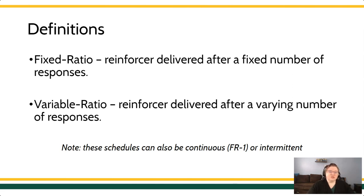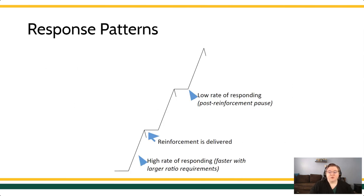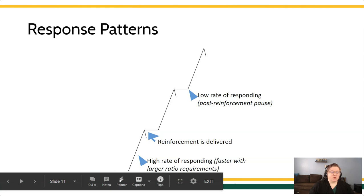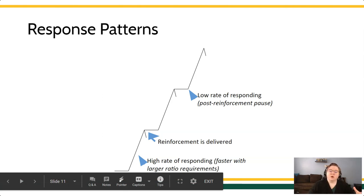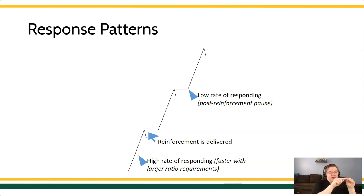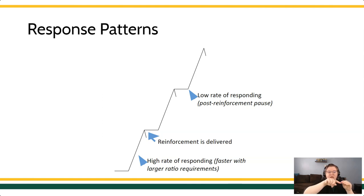Schedules produce a very specific pattern of responding. I want you to be able to understand how to read a cumulative graph. A cumulative graph is one where the line never goes down — it shows you the rate of responding through the pattern of the line. The closer you get to perfectly horizontal, the slower the behavior is happening, because the pen always moves along the horizontal axis and ticks up with each response. The closer you get to completely vertical, the faster the response occurs.